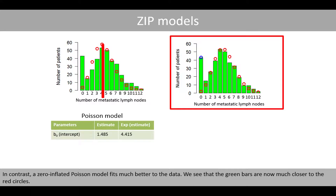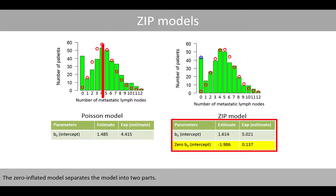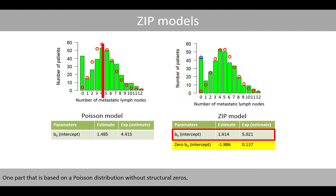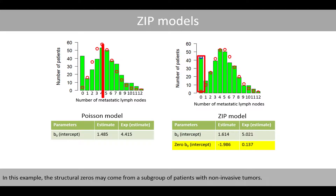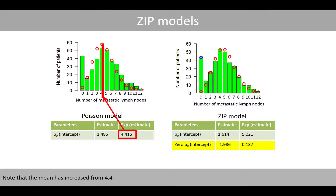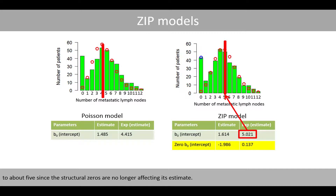In contrast, a zero-inflated Poisson model fits much better to the data — we see that the green bars are now much closer to the red circles. The zero-inflated model separates into two parts: one part that is based on a Poisson distribution without structural zeros, and one part that predicts the amount of structural zeros. In this example, the structural zeros may come from a subgroup of patients with non-invasive tumors. Note that the mean has increased from 4.4 to about 5 since the structural zeros are no longer affecting its estimate.